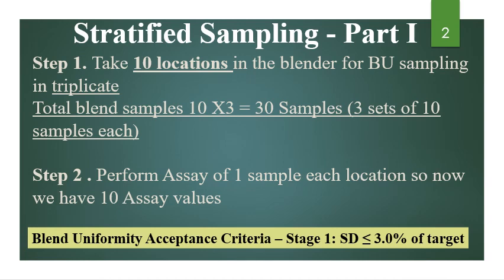Step 2: perform assay of 1 sample from each location. So now we have 10 assay values. Out of this triplicate sample, 1 set will be analyzed for assay. The blend uniformity acceptance criteria at this stage is: standard deviation equal to or less than 3% of the target. This will be the Stage 1 criteria for stratified sampling.